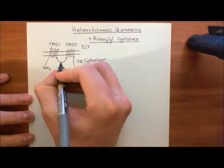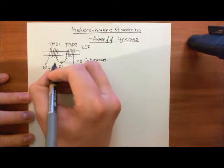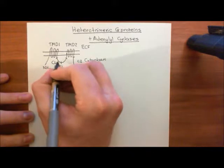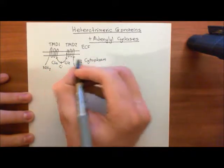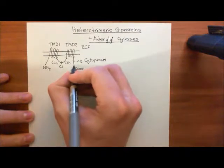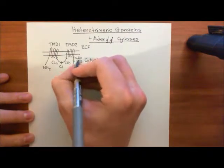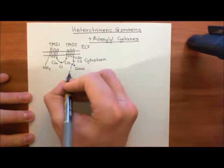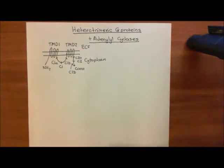Both the C1 and C2 domains are broken up further into two subdomains. C1 is broken up into C1A and C1B. C2 is similarly broken up into C2A — the portion closer to transmembrane domain 2 — and C2B. This is the overall structure of the adenylyl cyclase enzyme.